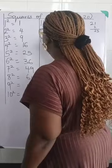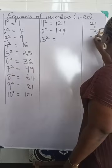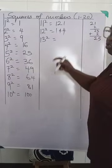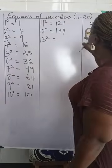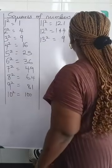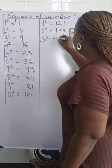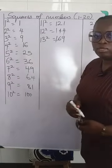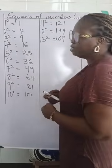13 squared. As usual, we'll put our plus 2 here, which will give us 25. So add 25 to 144. We're going to have 5 plus 4 is 9. 2 plus 4 is 6. And then we'll bring down our 1, which is 169. Automatically, 13 squared is 169.